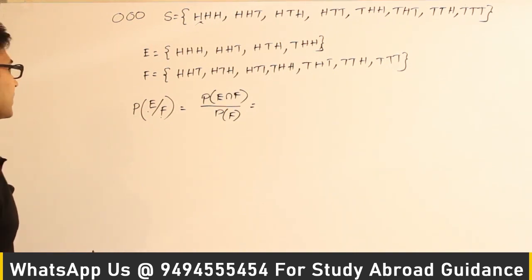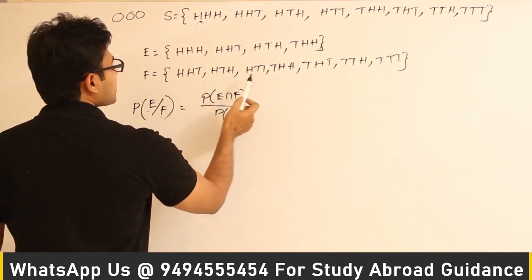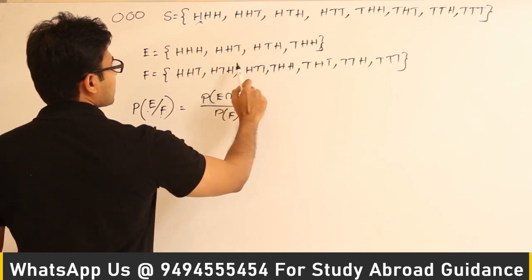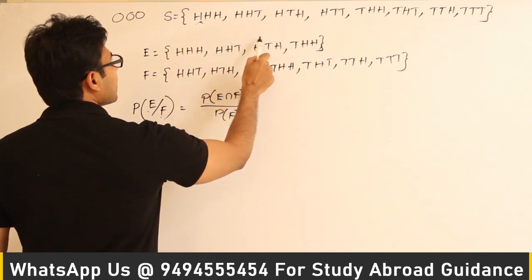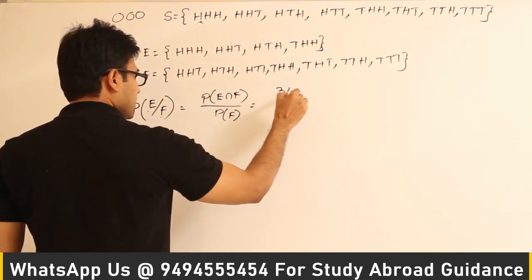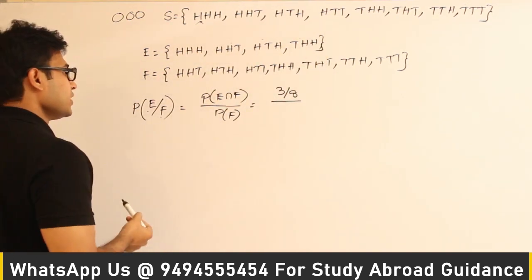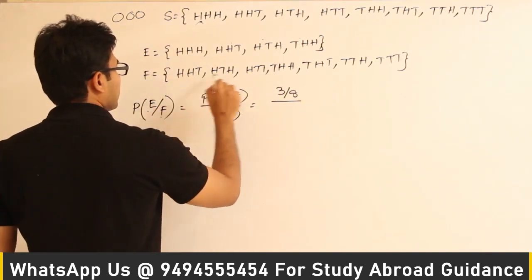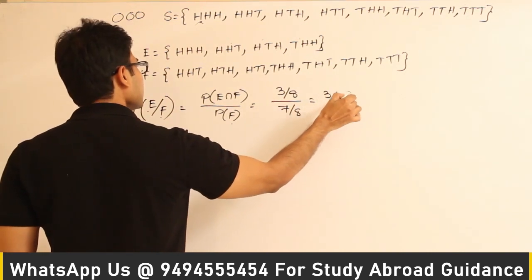We use the formula P(E|F) = P(E∩F) / P(F). For the intersection: HHH is not present, but HHT, HTH, and THH are all present. So the intersection has 3 elements, giving P(E∩F) = 3/8. P(F) = 7/8, so P(E|F) = (3/8) / (7/8) = 3/7.